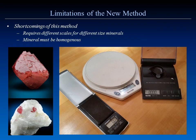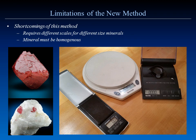Shortcomings of this method: use scales commensurate with the weight of the specimen. I have a kitchen scale with a five-pound capacity (about 2.2 kilos), a 300-gram capacity scale, and a very delicate carat scale for small gemstones with a capacity of about 50 grams. These two scales combined are about $50. Also, the mineral must be homogenous — a solid crystal without matrix. Crystals in matrix cannot be easily measured.